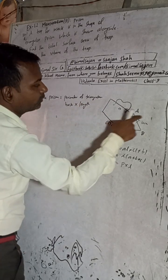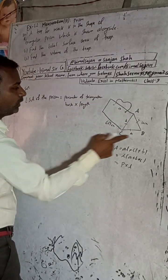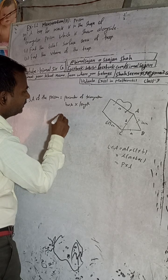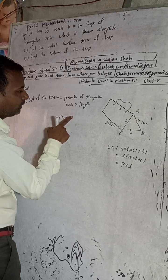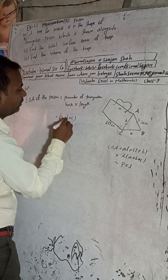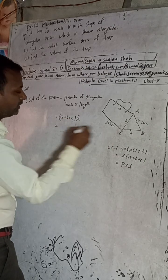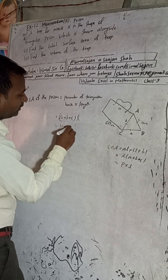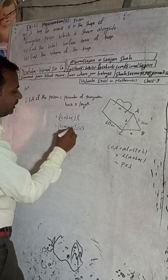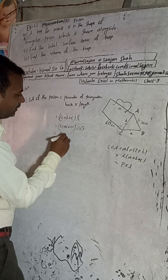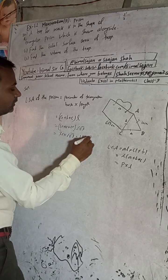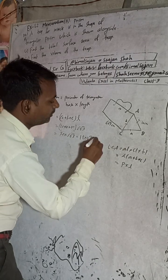The perimeter of the triangular base is a + b + c. All sides are 10, so perimeter = 10 + 10 + 10 = 30. The length L is 6√3. So lateral surface area = 30 × 6√3 = 180√3 cm².